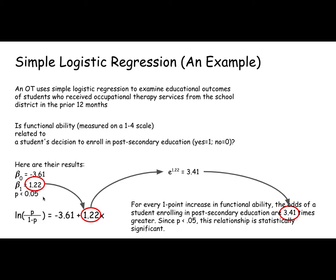So in order to actually calculate the odds ratio, they raise e to 1.22. That's this 3.41 is your odds ratio. And what that's telling you is that for every one point increase in functional ability, somebody is 3.4 times more likely to go to college.